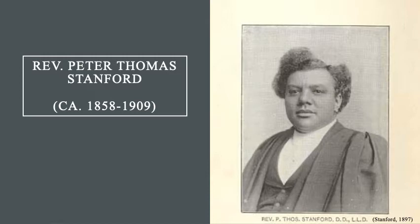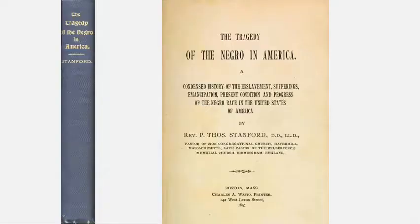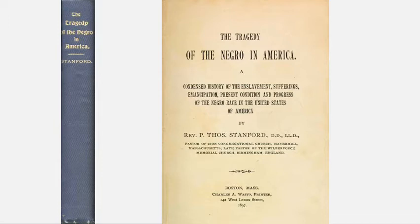He wrote and published a great deal, including two memoirs — 'The Plea of the Ex-Slaves Now in Canada' in 1885 and 'From Bondage to Liberty' in 1889 — as well as three editions of the textbook titled 'The Tragedy of the Black Person in America.' The Tragedy is a history text in which Stanford recounts the history of enslavement, examining not just the history but the brutality, freedom, hope, and the current state of things in the late 19th century. Throughout this text there are allusions to classical imagery including assassinated emperors and the role of Greek and Latin in the education system.